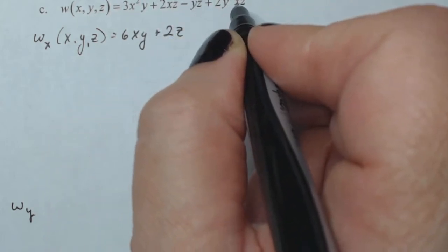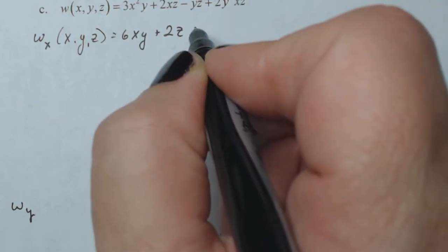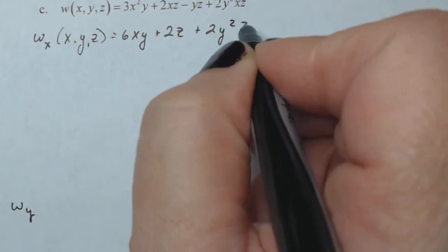That's a constant because there's no X's in it. That has just one X in it. Everything else is a constant X to the first power. So this should be two Y squared Z.